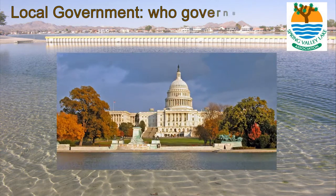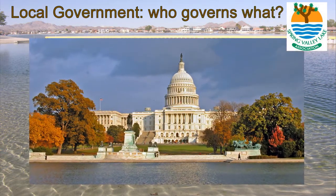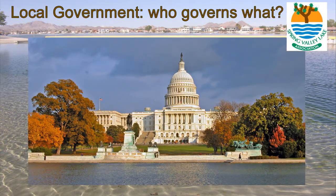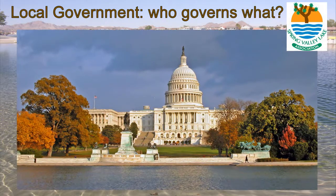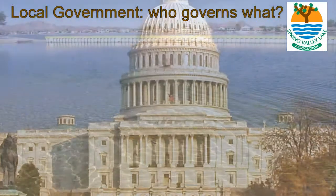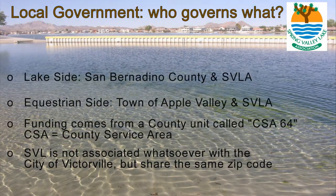This section attempts to explain the governmental agencies that provide services such as water, sewer, street maintenance, law enforcement, etc. to SVL. It is complex and confusing, but we'll do our best to explain some of the details. Our community is a small island of county-governed land which is sandwiched between the three municipalities of Apple Valley, Hesperia, and Victorville, so it makes it a little confusing as to which agency is responsible for maintaining what.